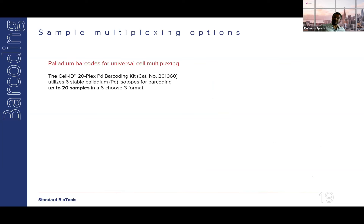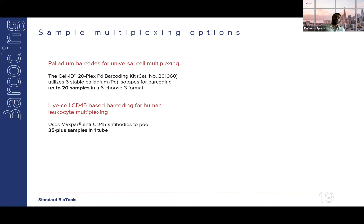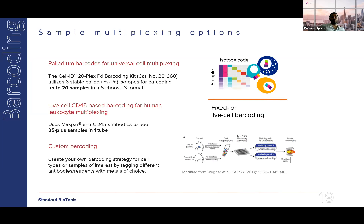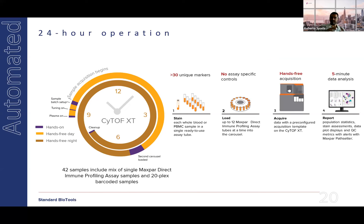You can perform barcoding with ready-to-use kits: the palladium barcoding kit for fixed cells allows you to pool up to 20 samples into one tube. For immune cells, a live-cell CD45-based barcoding approach using CD45 antibodies allows barcoding of more than 35 samples within the same tube. You can also do custom barcoding by tagging different antibodies and reagents with the metal tags of your choice — really enabling a fast turnaround to get the data you need.